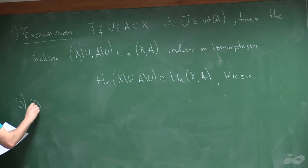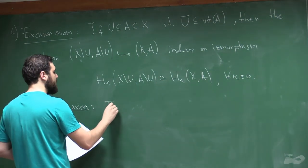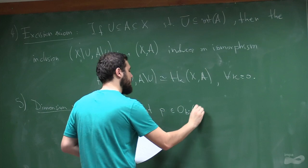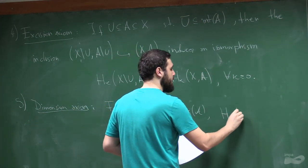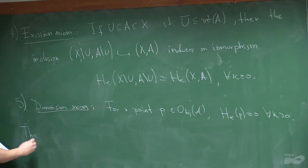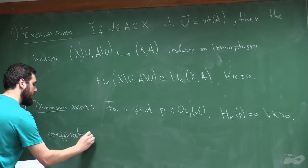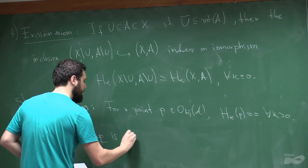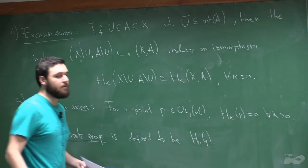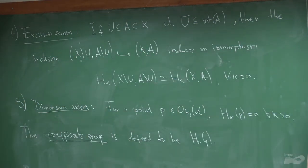The last axiom is the dimension axiom: for the point P, all homology groups H_k(P) are zero for every k > 0. By definition, the coefficient group is defined to be H₀(P). These are the axioms for a homology theory on an admissible category.